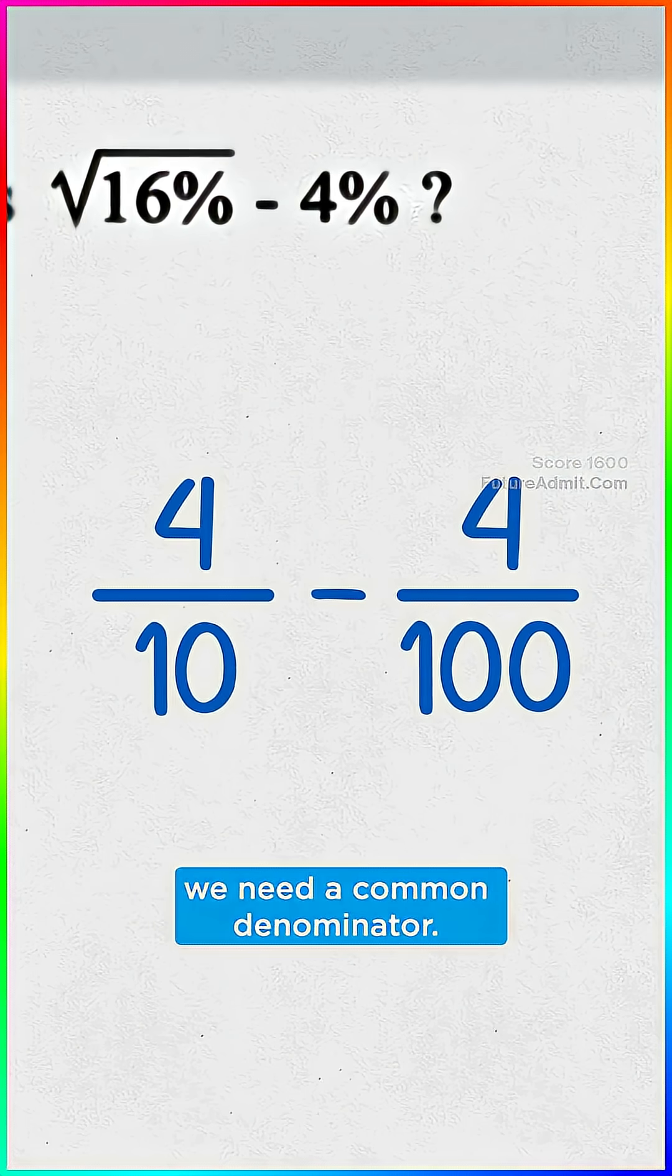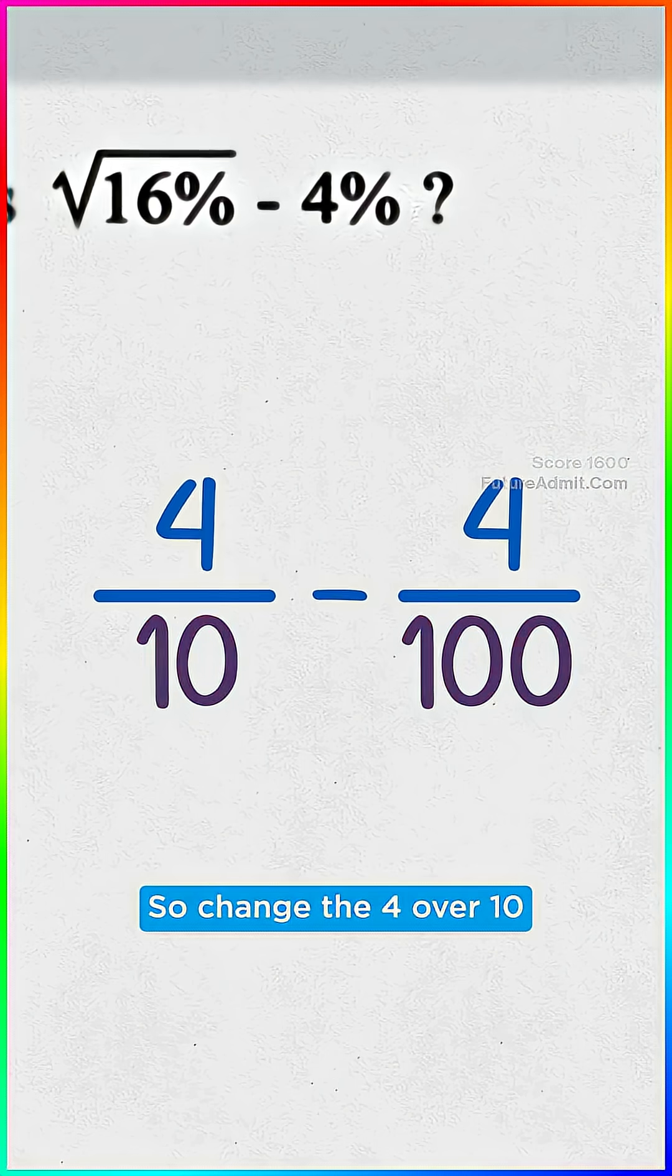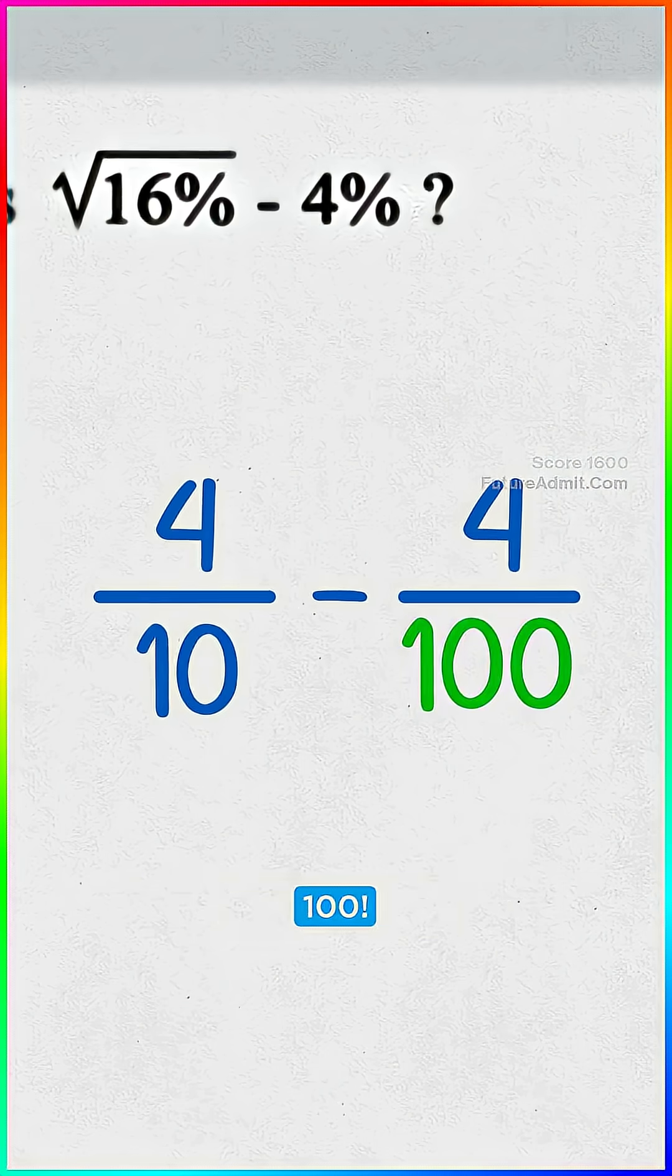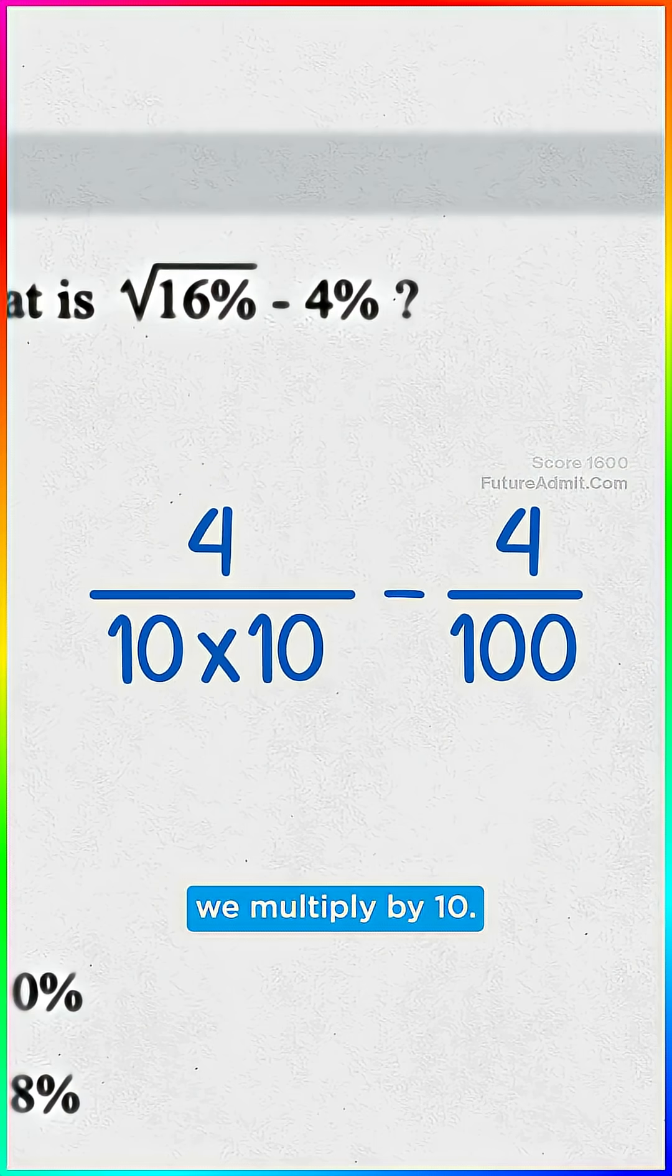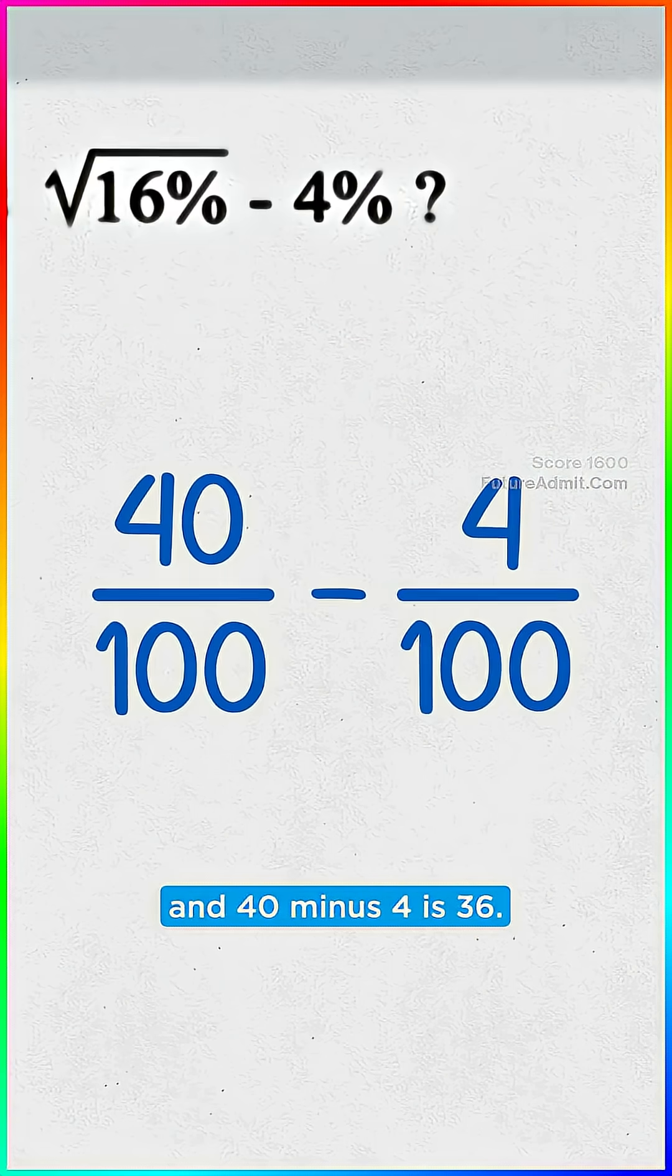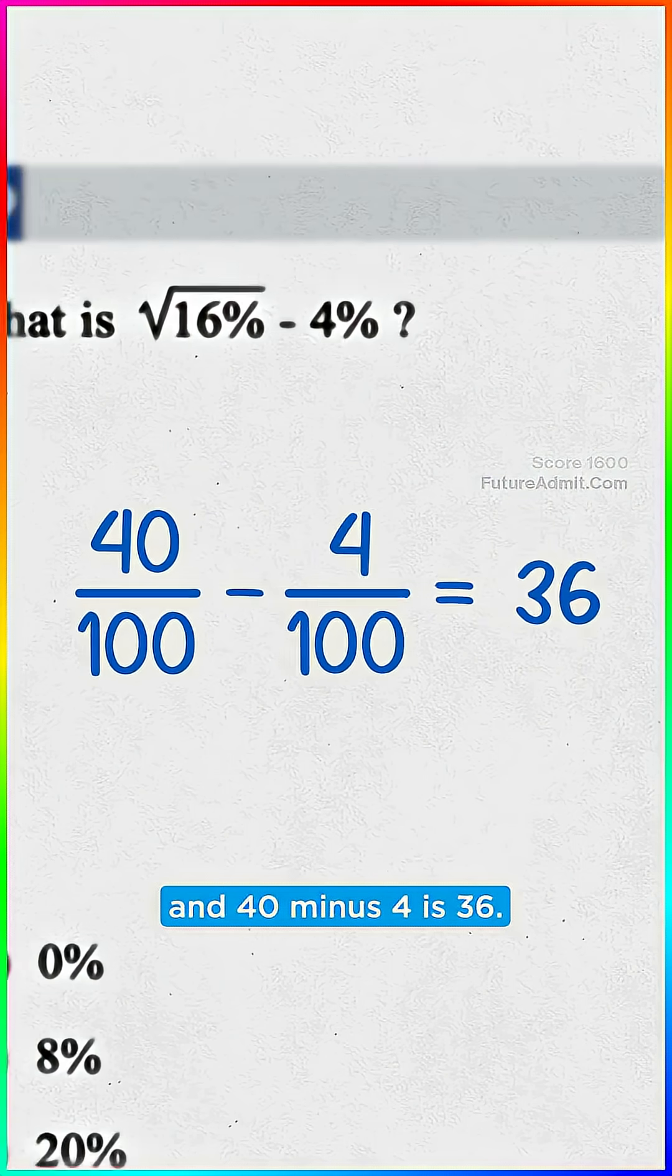To subtract these, we need a common denominator. So change the four over 10 so that it has the same denominator as four over 100. To go from 10 to 100, we multiply by 10. So multiply the top by 10. Four times 10, that's 40. And 40 minus four is 36.